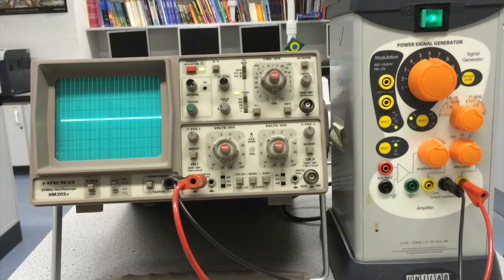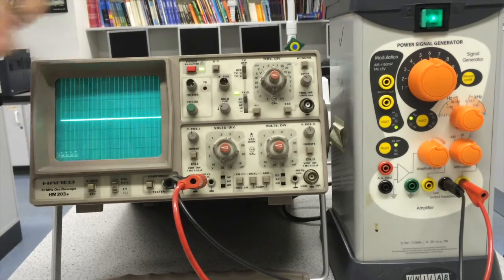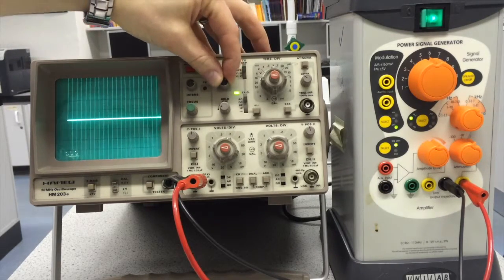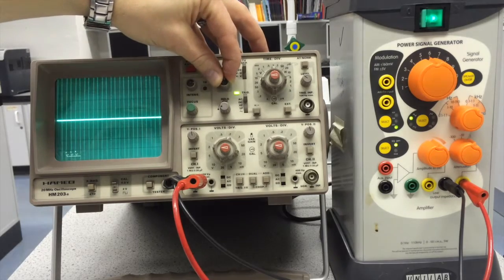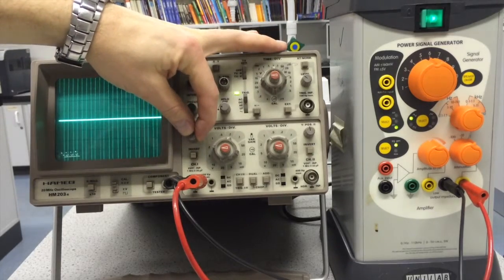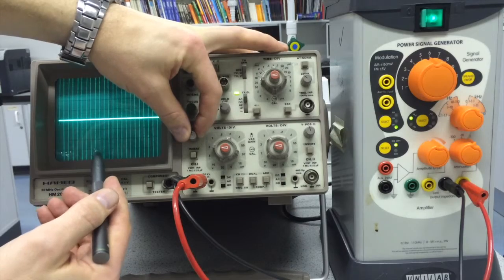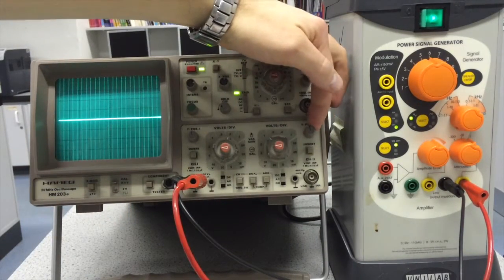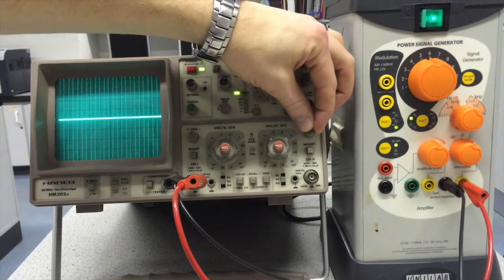Other settings that we have: this is the X position so I can shift the position of the beams in the X direction with that, so that can help with taking measurements. This is the Y position so I can shift the vertical position of the wave using that, and this is the Y position for the second channel where I can do the same thing with that second beam there.